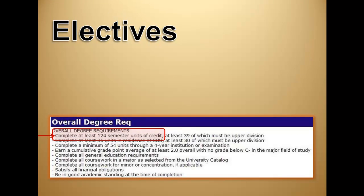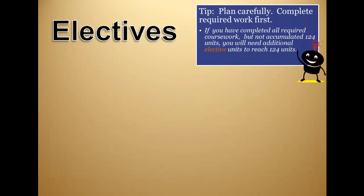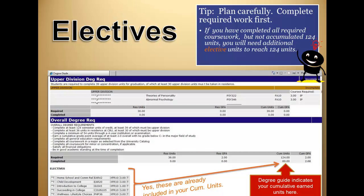The first item on the list is to complete at least 124 semester units of credit. This requirement determines if a student will need additional elective units. It's recommended that you plan carefully and register for all required classes first. If you complete all required coursework but have still earned less than 124, you'll need additional elective units. This chart in your degree guide indicates how many total units have been completed by you. You are encouraged to check your cumulative units here after each semester to track your progress toward the goal.